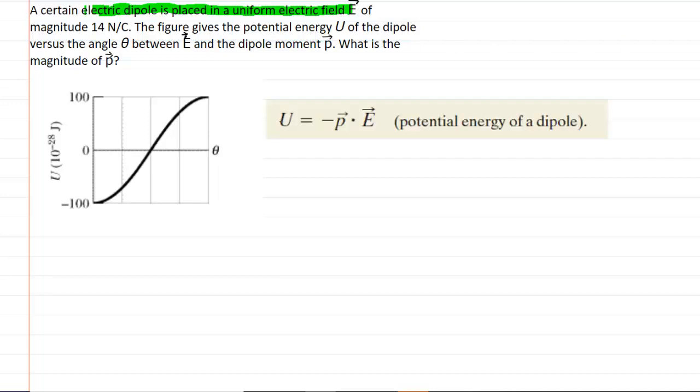So U would represent the potential energy of that electric dipole. P is the dipole moment, and we're actually looking for the magnitude of the dipole moment in this question. And then E is the electric field.